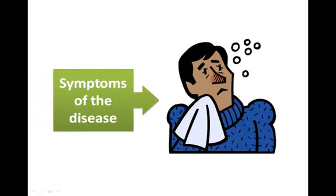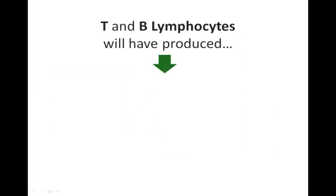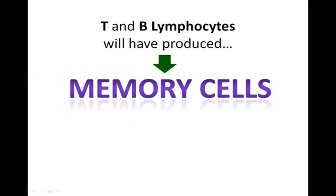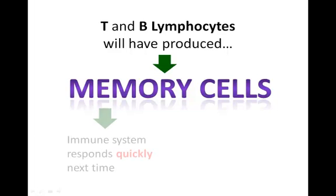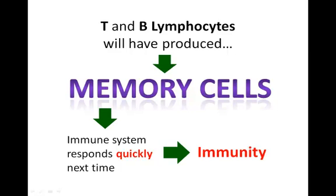Exactly. At the end of the primary response, both the T and B lymphocytes will have produced memory cells which remain in the body for a long time after the infection. This allows the immune system to respond quickly to a second infection, so the person is now immune. If the same pathogen enters the body again, the immune system will produce a quicker immune response.